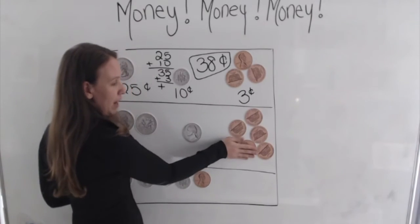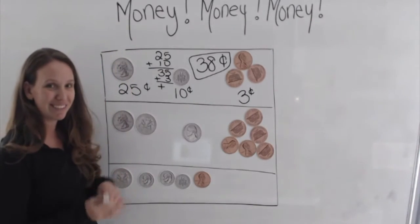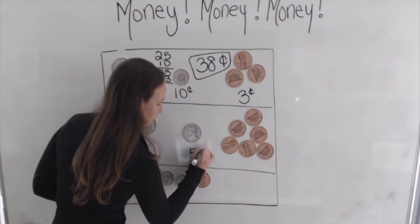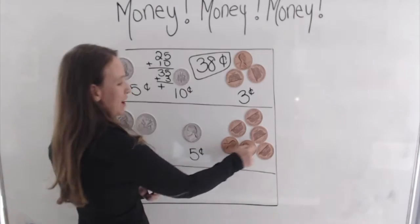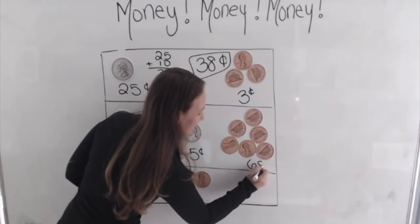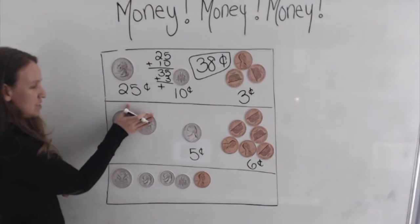And if you guys remember, how much is a nickel worth? Five cents. How much are my pennies worth? Well, one, two, three, four, five, six. Six cents and two quarters.